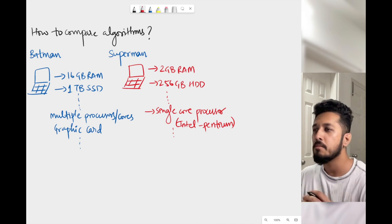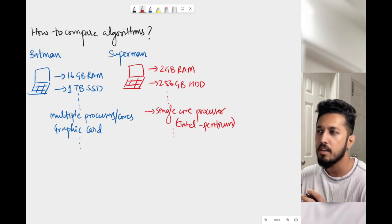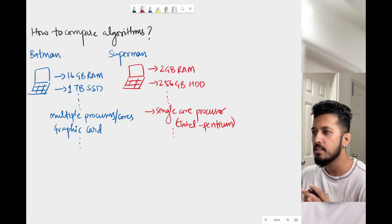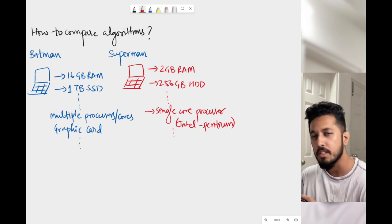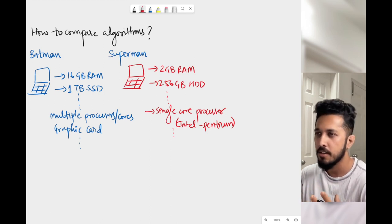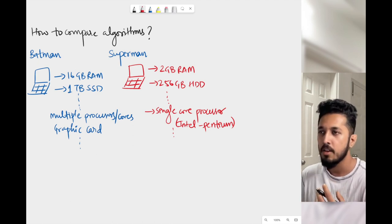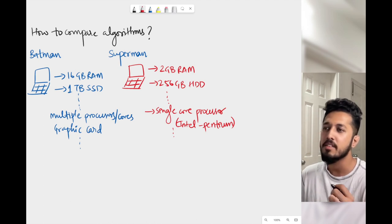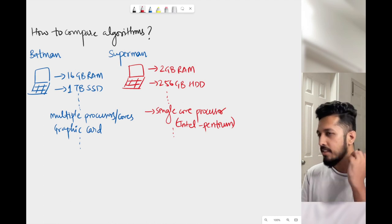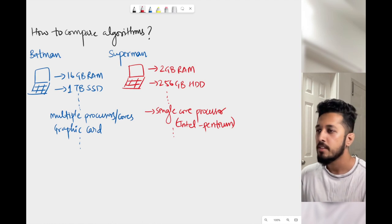Now let's say Batman comes up with an algorithm to sort numbers using bubble sort. His algorithm runs at a very high speed on his machine and he is able to sort numbers very fast. But when Superman also comes up with the same algorithm and tries to run it on his machine, it takes a bit extra time. So can we say Batman's algorithm is better? Absolutely not.